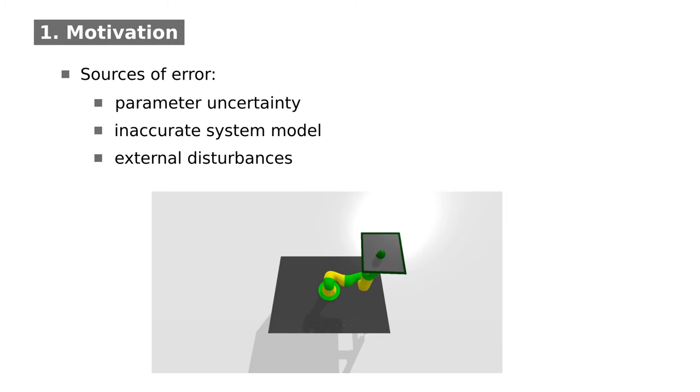However, if the initial position and the size of the ball are slightly changed, the same trajectory fails to balance the ball and the distance to the initial spot increases over time.